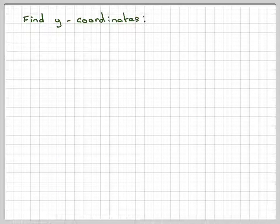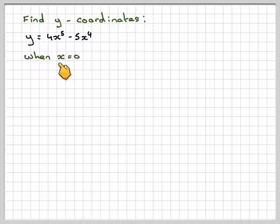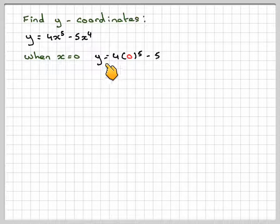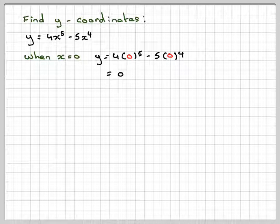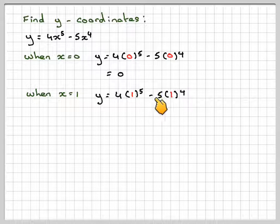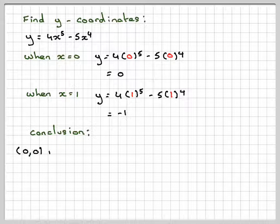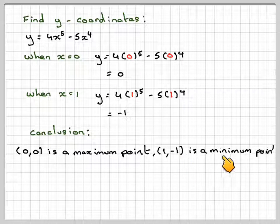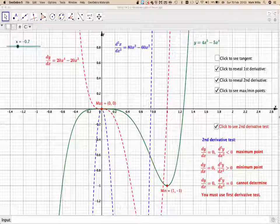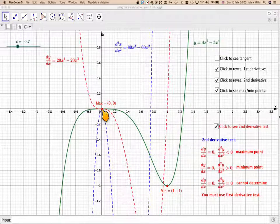Finding the y-coordinates using y = 4x⁵ - 5x⁴: when x = 0, y = 4(0)⁵ - 5(0)⁴ = 0, giving the point (0, 0). When x = 1, y = 4(1)⁵ - 5(1)⁴ = 4 - 5 = -1, giving the point (1, -1). So (0, 0) is a maximum point, and (1, -1) is a minimum point — confirmed by the graph.